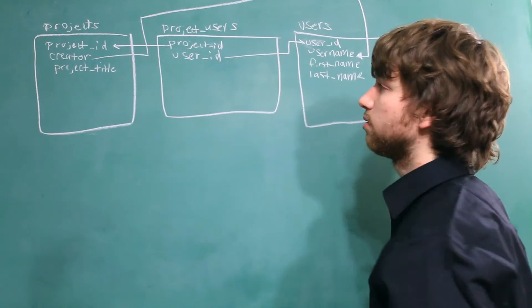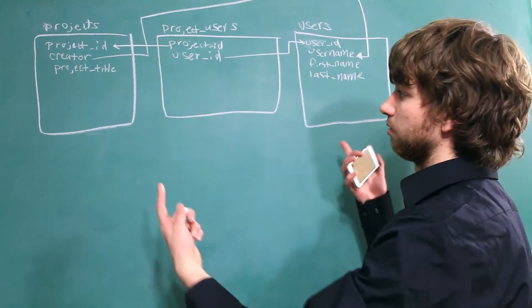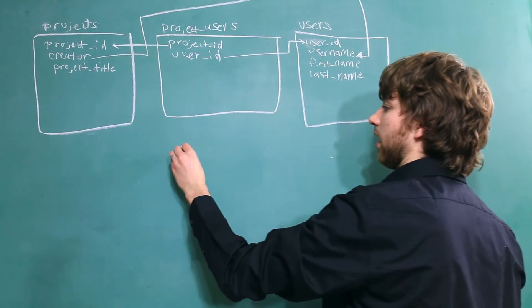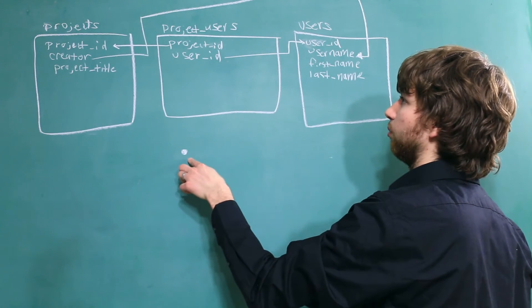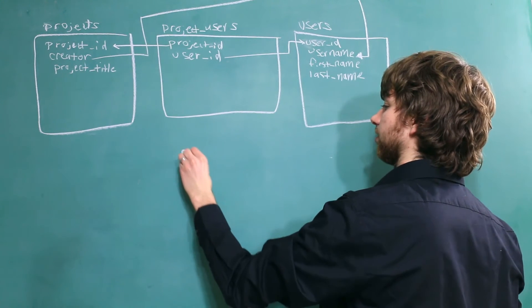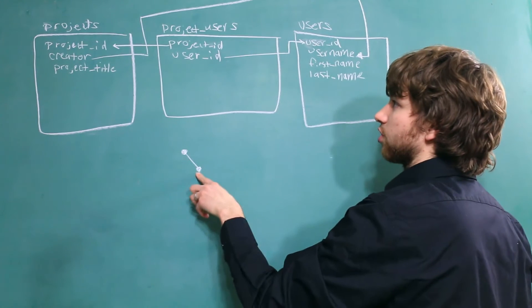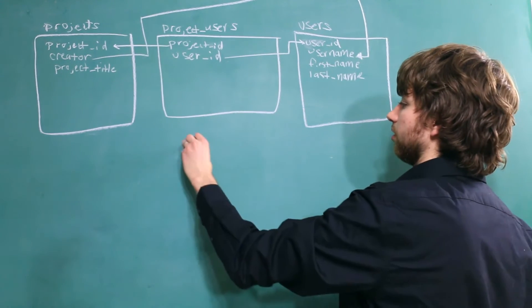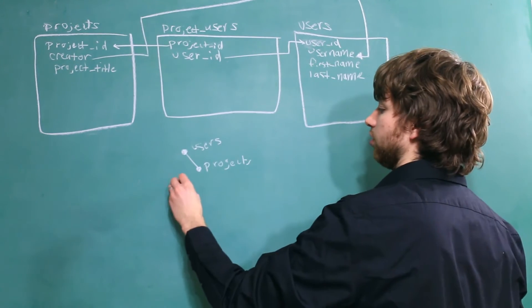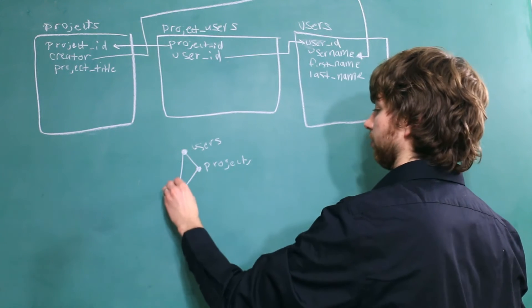Now the project users table, that's a child of both of these tables. So I guess if you had to draw it out, you'd have this being the users table, this being the projects table. That's a child of the users. And then we'd have project users down here, which is a child of both of them.